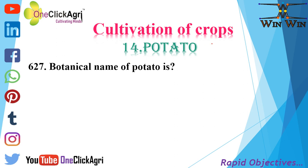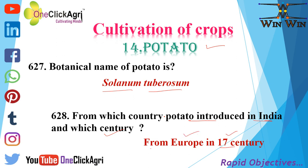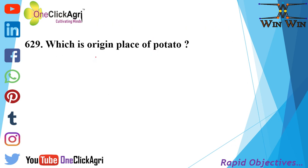Cultivation of crops — Potato. Botanical name of potato is Solanum tuberosum. Potato was introduced in India from Europe in the 17th century. The origin place of potato is South America, specifically Peru.